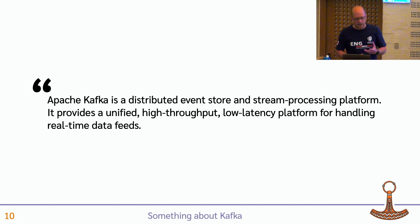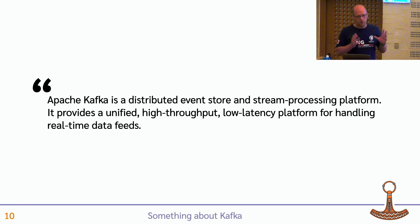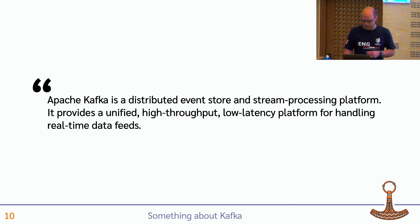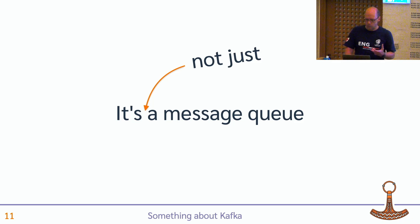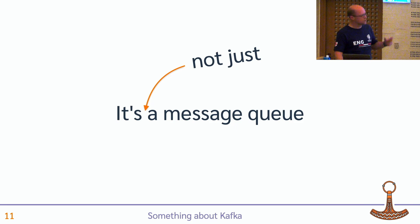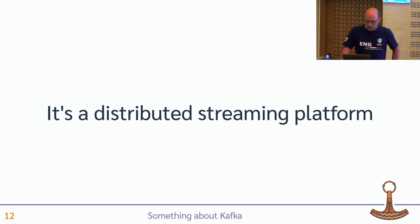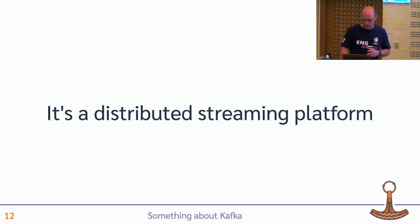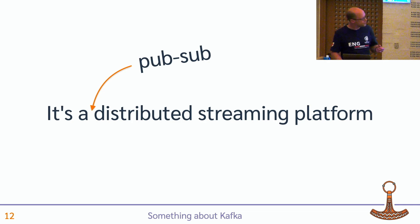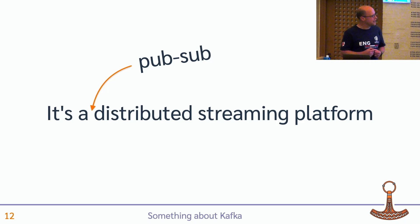If you look on Wikipedia, you get something like this back: it's a distributed event store, stream processing platform, high throughput, low latency. That's a great and correct description, but it doesn't really convey so much what it is. Kafka is sometimes labeled a message queue, and that's kind of selling it short. It can do a lot more, even if you can implement most traditional enterprise queuing patterns on top of Kafka. More accurately, it's a distributed data streaming platform — distributed, scalable, durable, replicable. Specifically, it implements the publish-subscribe pattern, the pub-sub stuff, and it really matters because producers and consumers of data can operate completely asynchronously, completely decoupled.